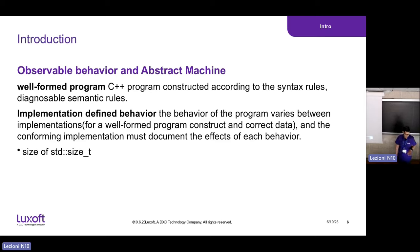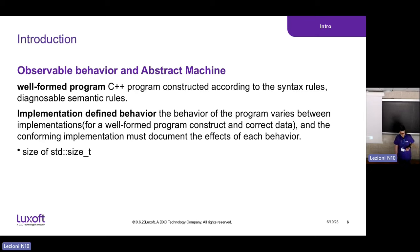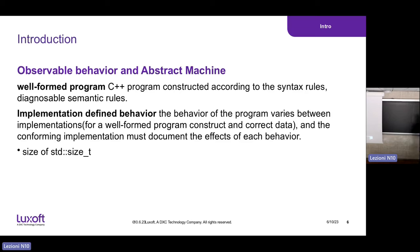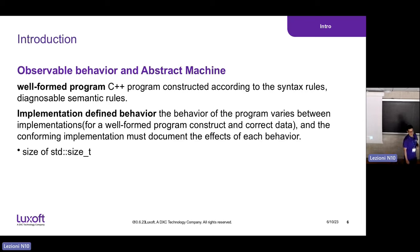The abstract machine defines four categories of observable behavior. The first is a well-formed program — a C++ program constructed according to syntax rules, in a well-formed state that behaves as expected. The second is implementation-defined behavior: the program's behavior varies between implementations, where the implementation could be an architecture, operating system, or compiler. An example is the size of std::size_t — on an ARM 32-bit processor it's four bytes, while on an x86 64-bit machine it's eight bytes.